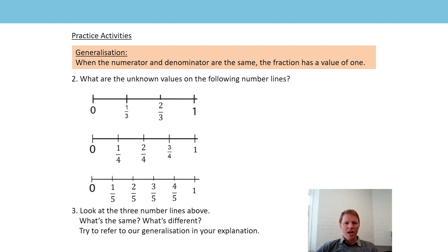You were then asked to look at the three number lines and think what's the same and what's different. Something I can see - all of the lines are the same length, which is why 0 and 1 are found on the same point on each number line. The location of each fraction is slightly different based on its value, and that's based on the size of each part. The denominator for the fractions on each line are the same, because each line has been split into a certain number of equal parts. The key thing is we can put 1 at the end of those number lines, where the numerator and denominator are the same - instead, we now know we can say it has a value of 1.